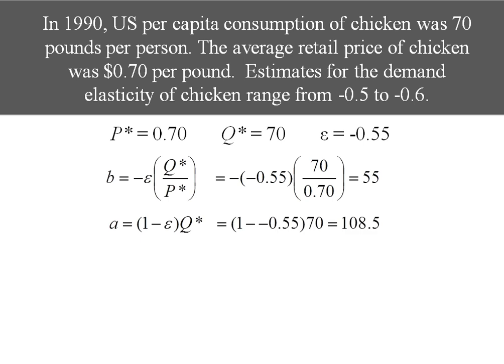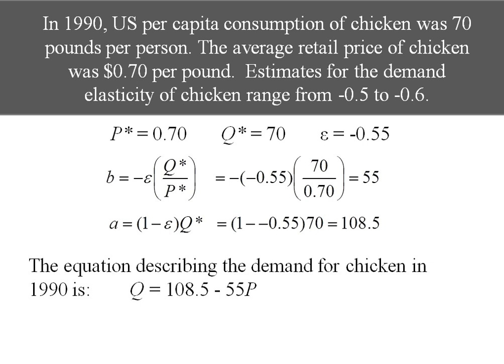Plugging in to solve for A, 1 minus negative 0.55 times 70 is going to give us 108.5. So now that I know A and B, I can write the equation for demand for chicken: Q equals 108.5 minus 55P.